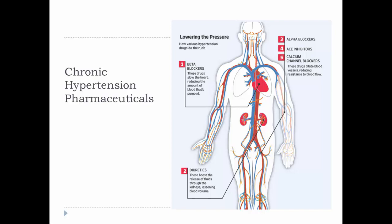Some pharmaceuticals used to treat chronic hypertension include beta blockers, which slow your heart rate down and reduce the contractile strength of the heart, therefore lowering cardiac output and blood pressure. Diuretics cause you to urinate more, so blood volume goes down, which also lowers blood pressure.